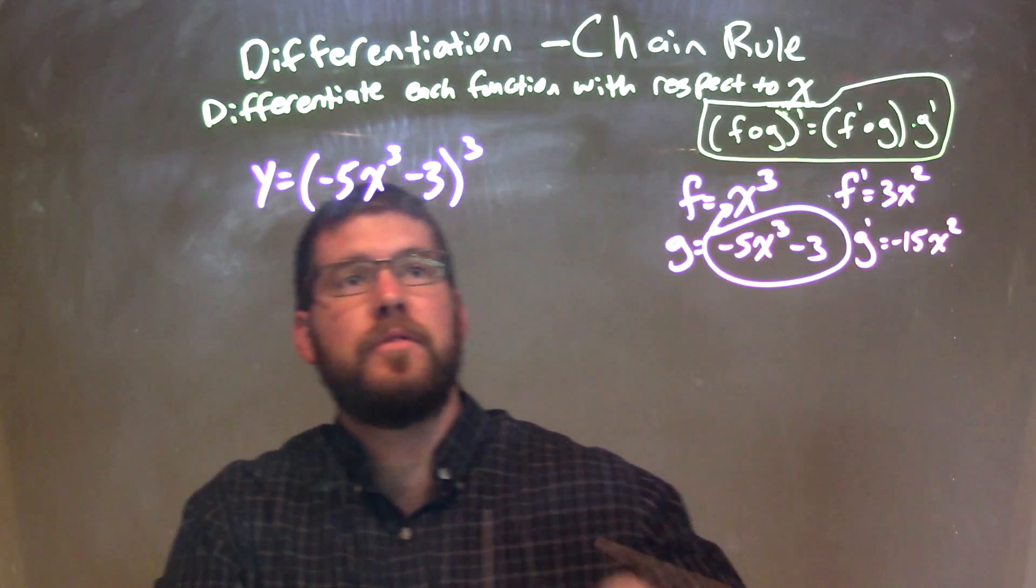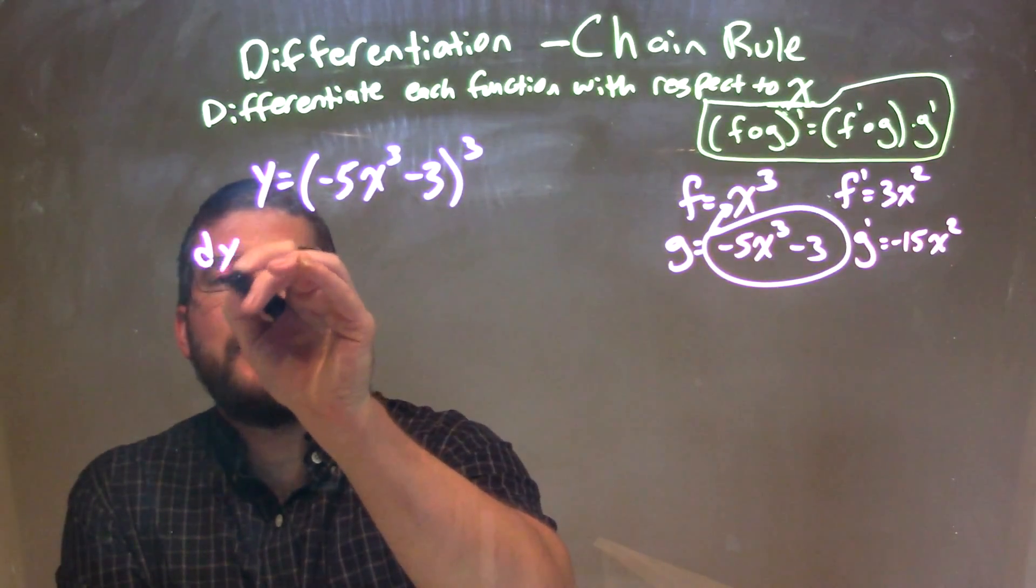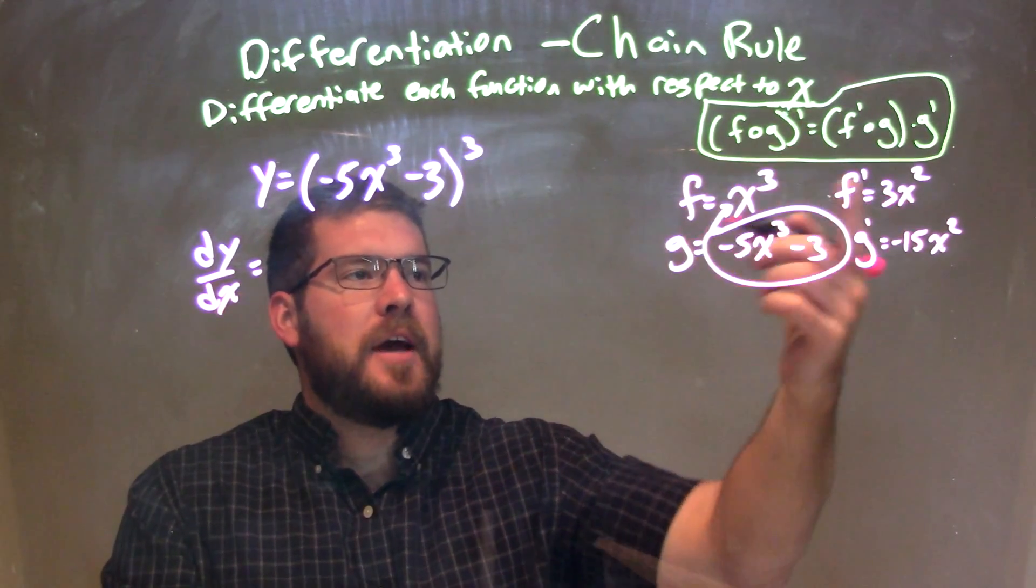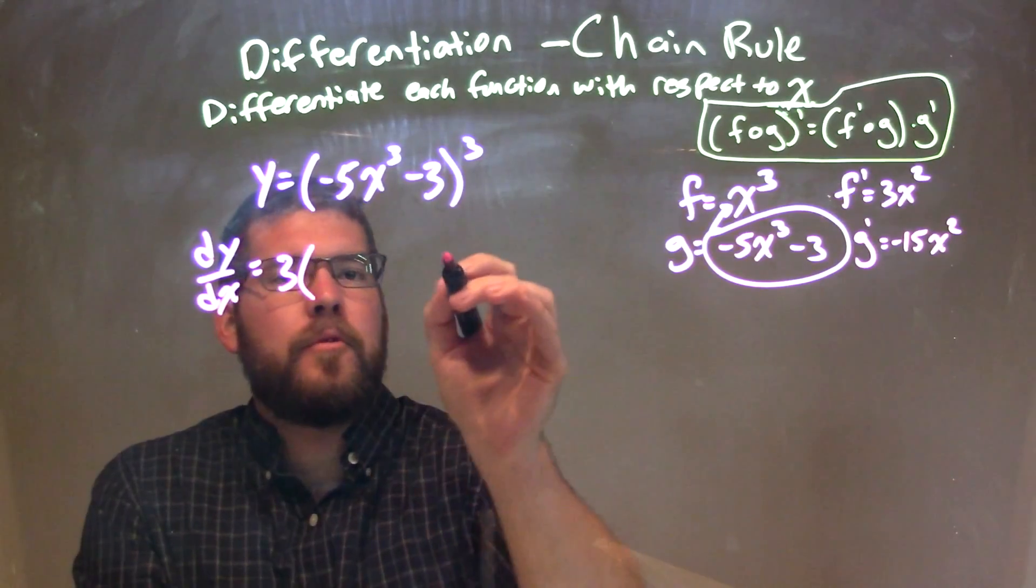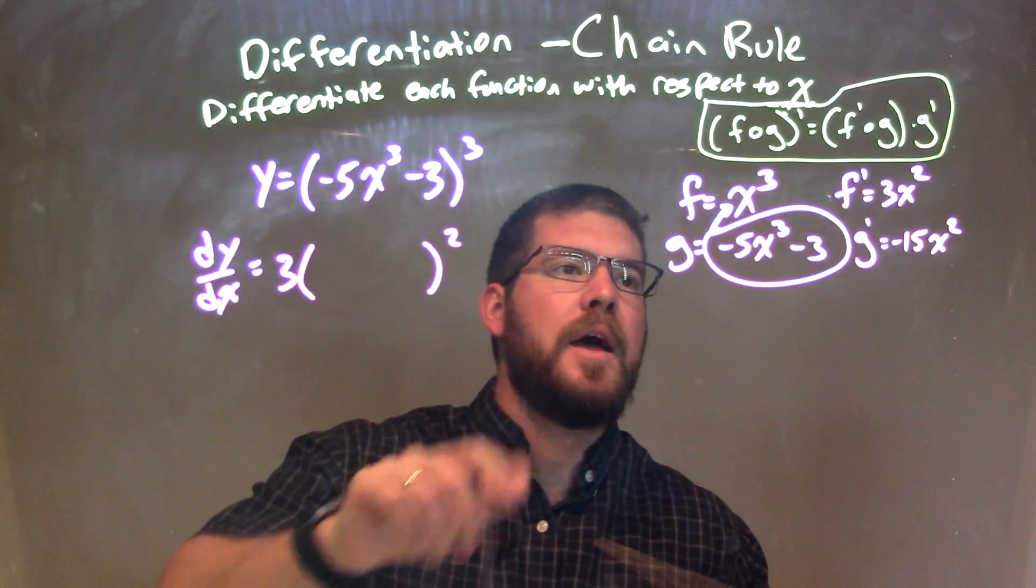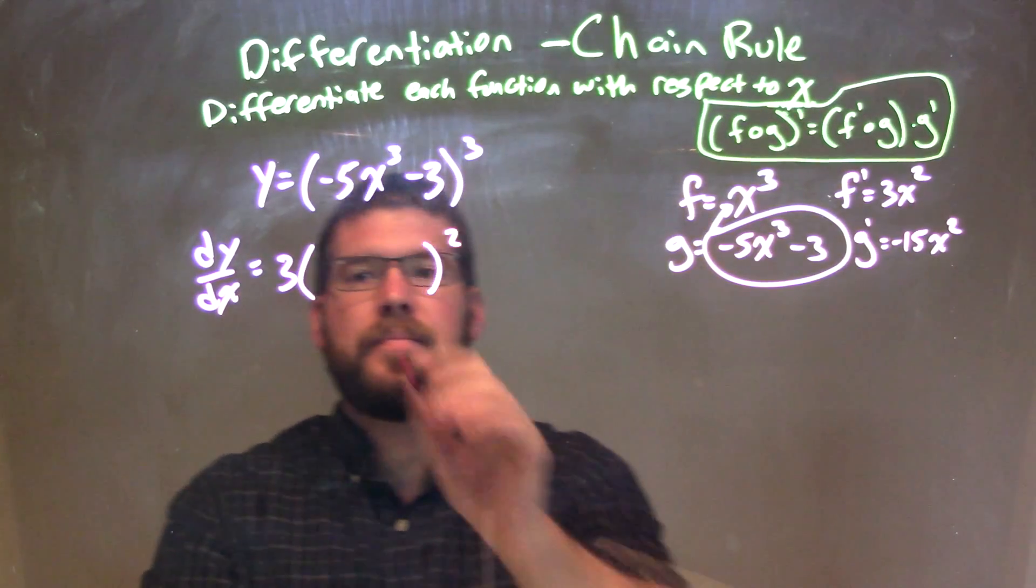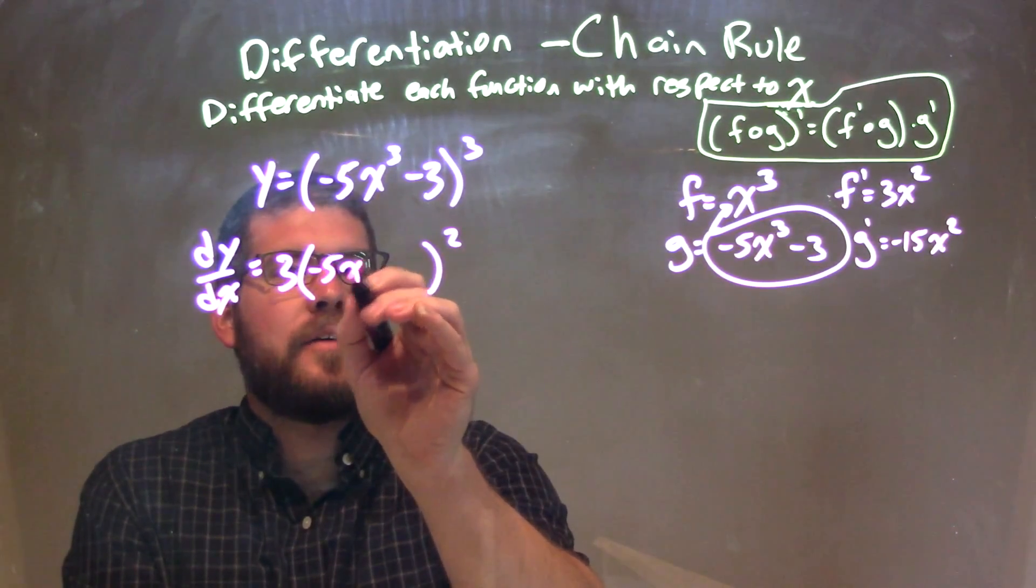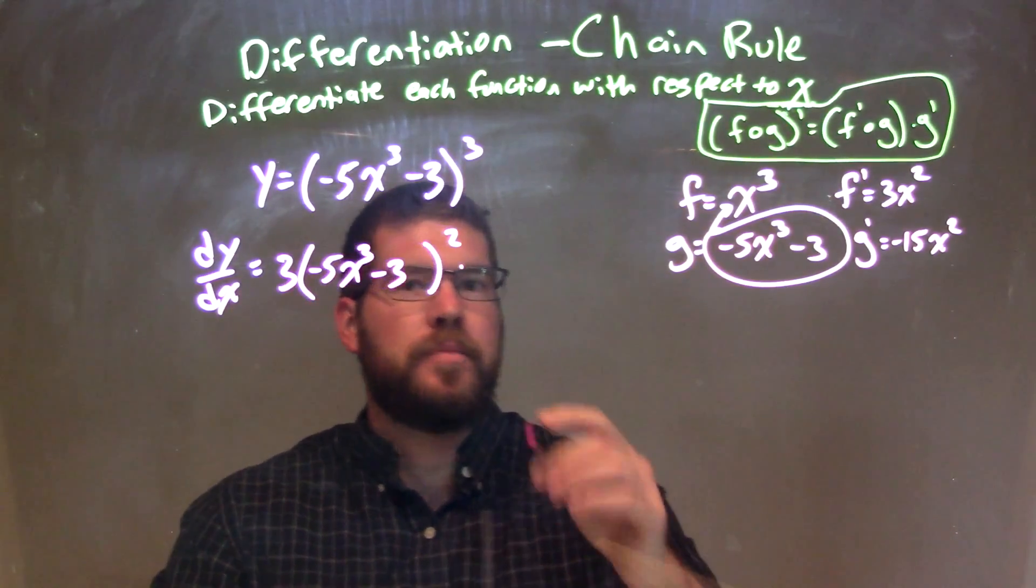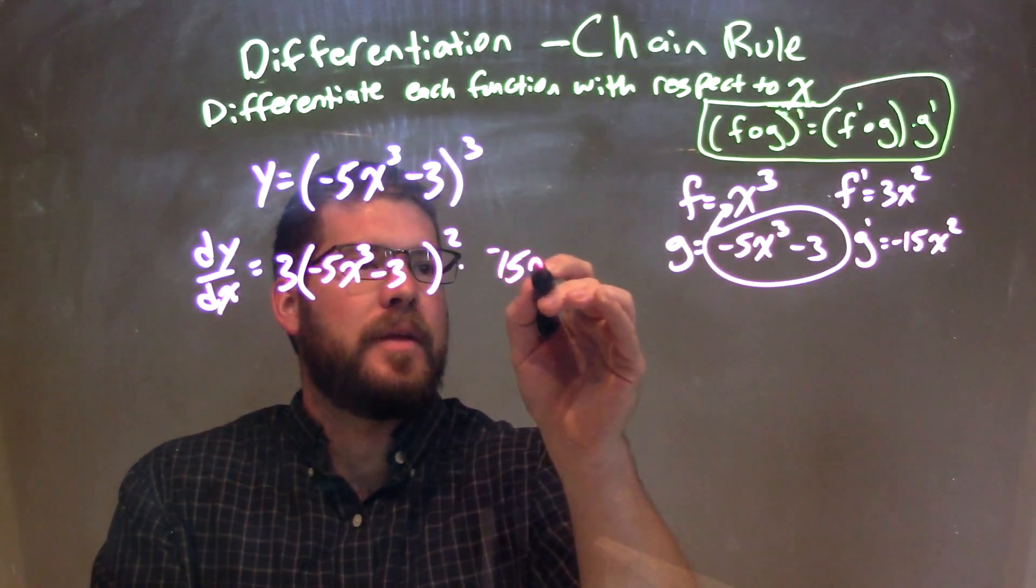Let's take the derivative using the chain rule. So I have dy/dx here. I need f prime of g, f prime being 3. Create the space to the second power. 3 times space to the second power, and that space is where I'm going to put g: negative 5x to the third minus 3. Now I'm going to multiply that by g prime, which is negative 15x squared.